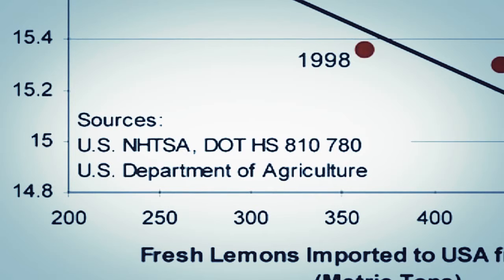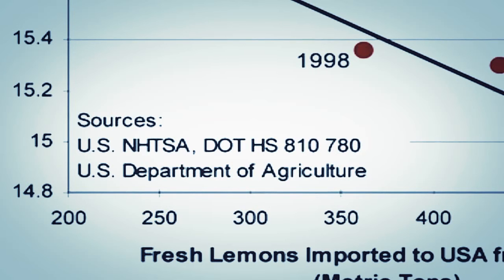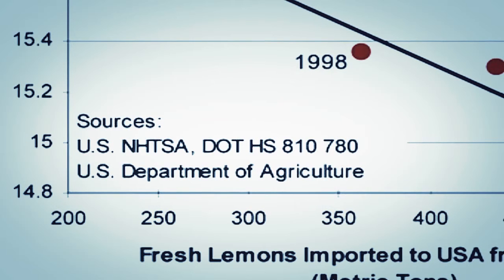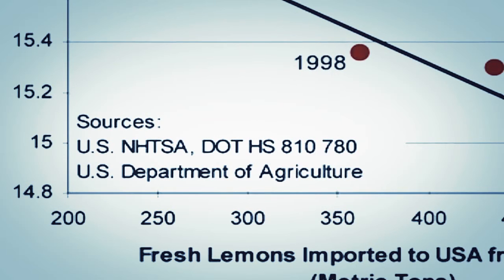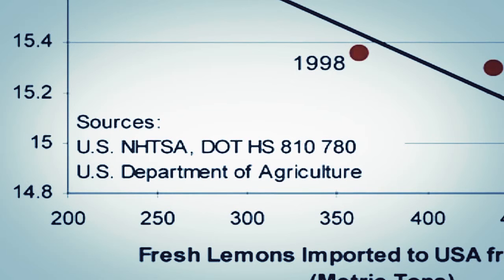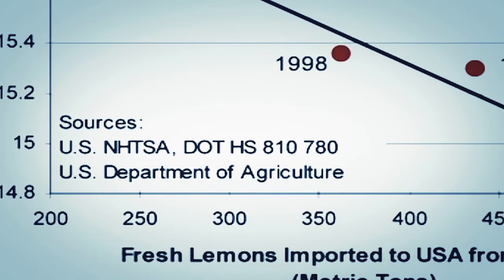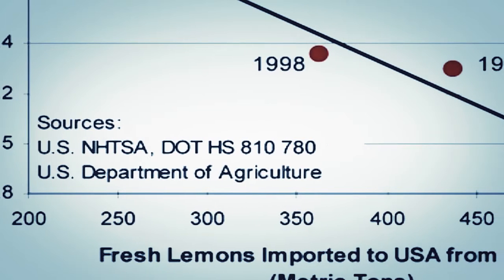Now this is real data. As you can clearly see, traffic fatality rates have dropped and Mexican lemon imports have increased at the same time. The R-squared, or coefficient of determination, is quite high, suggesting that there is a strong correlation.